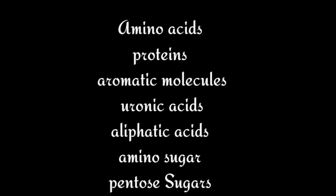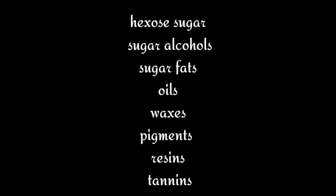Humus mainly contains amino acids, proteins, aromatic molecules, uronic acids, aliphatic acids, amino sugars, hexose and pentose sugars, sugar alcohols, sugar fats, oils, waxes, pigments, resins, and tannins. All these substances are present in the organic matter.